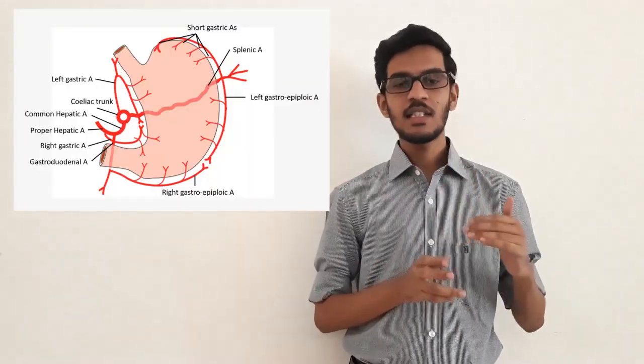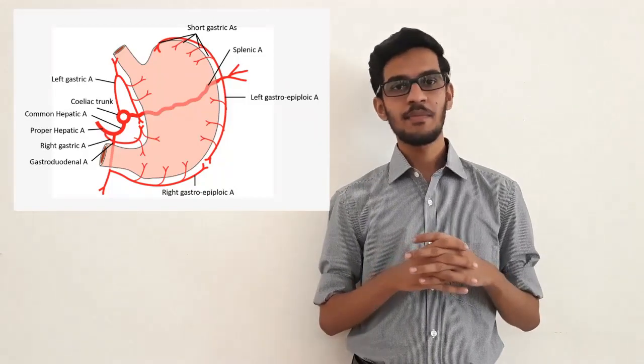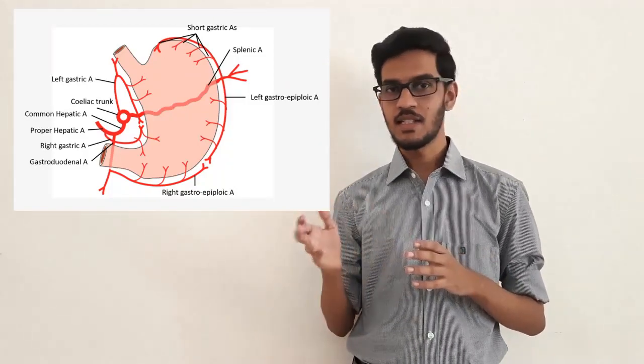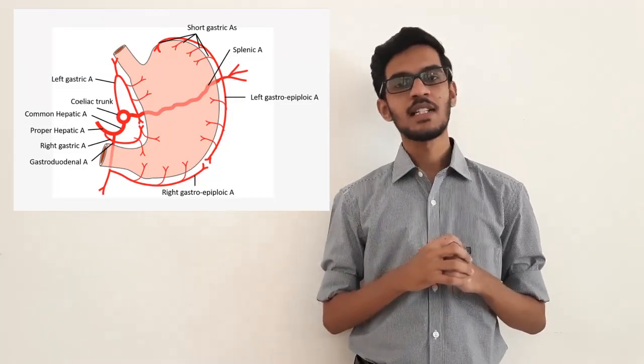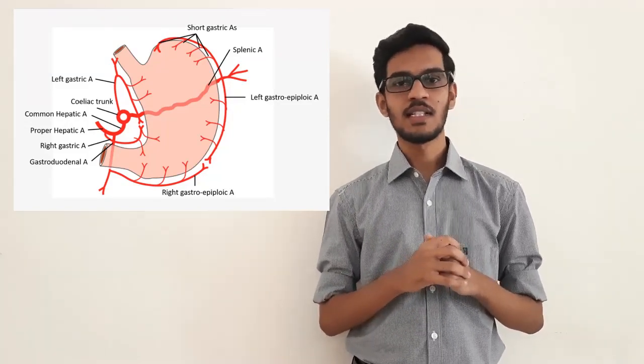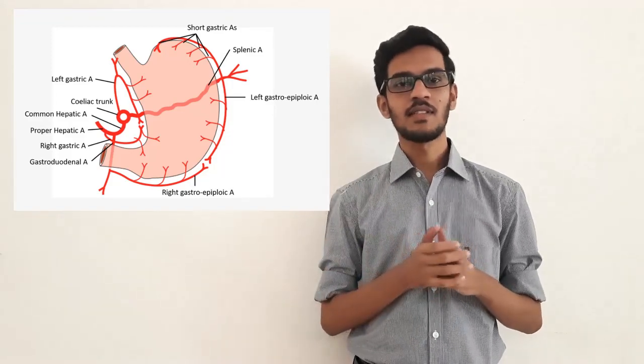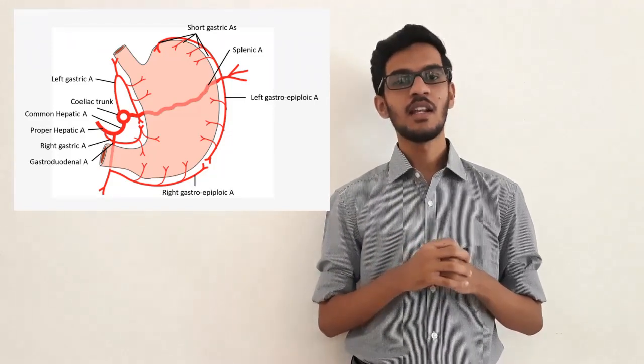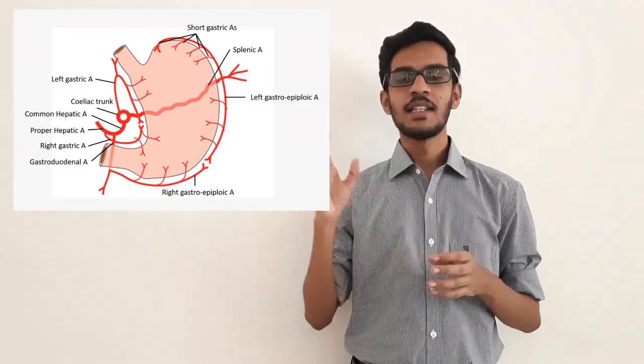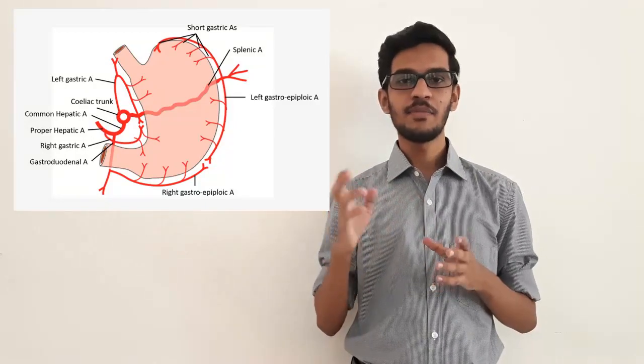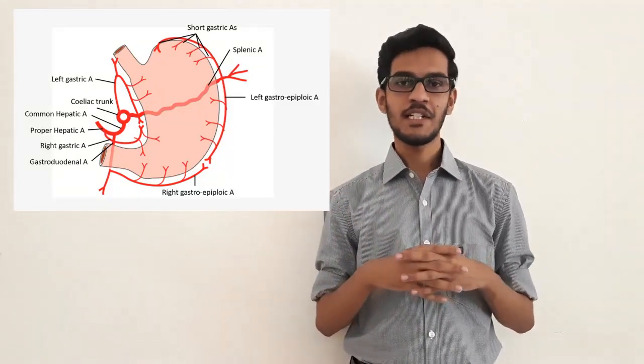Blood supply of stomach. The arteries supplying the stomach are derived from celiac trunk. The lesser curvature of the stomach is supplied by left gastric artery and right gastric artery. The upper part of the greater curvature is supplied by six short gastric arteries. The rest of the greater curvature is supplied by left gastroepiploic artery and right gastroepiploic artery. These arteries lie in between the peritoneal attachments of stomach.